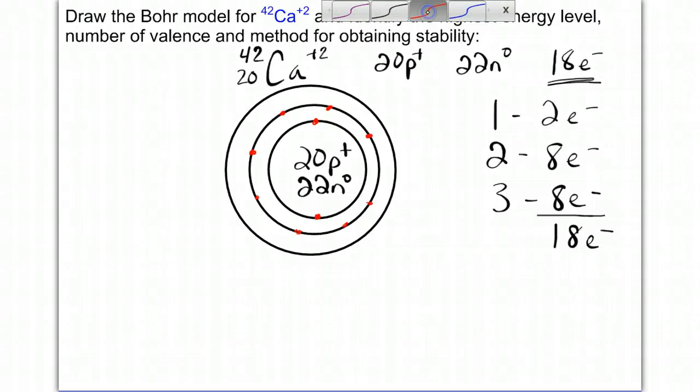Not as even as I'd like them to be, but it'll do the job. 1, 2, 3, 4, 5, 6, 7, 8. So this has 8 valence electrons. So what is it going to do to obtain stability? Nothing. It already has stability. That's why calcium here has the plus 2 charge.